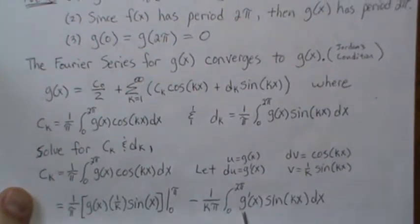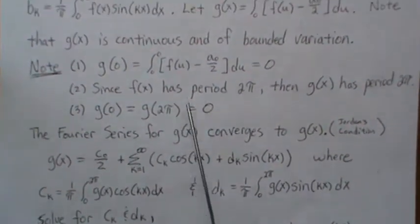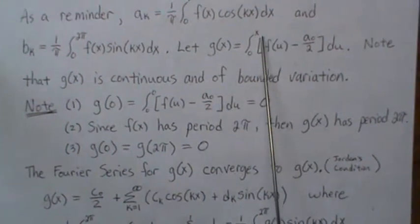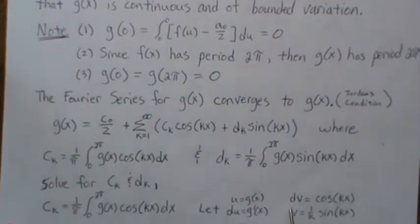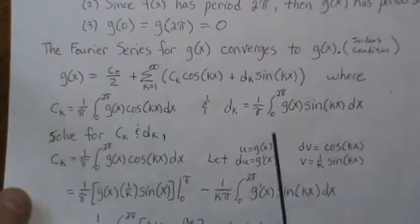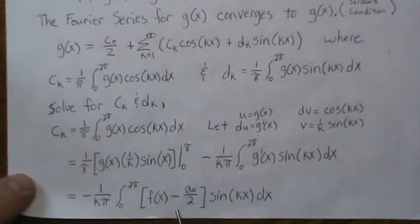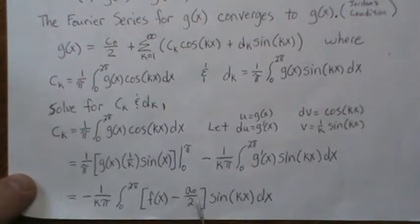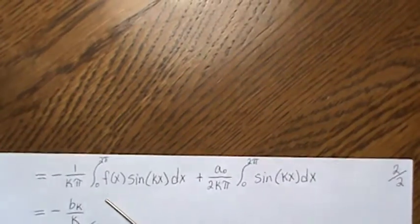But the way we define g(x), the derivative of g(x) is just this inner piece here. So if we replace g'(x) with what it should be, it's this. Now let's take this sine into both and integrate two pieces of that. And we get this.